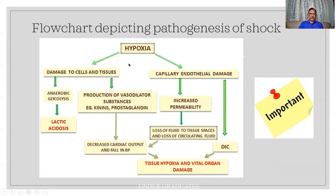At the cellular level, hypoxia causes damage to cells, leading to glycolysis and lactic acidosis — the culprit. There is also production of vasodilators, kinins, and prostaglandins, which can result in peripheral pooling, decreased cardiac return and output, and a fall in BP. There is also endothelial damage leading to increased permeability, which again leads to peripheral accumulation and decreased cardiac output. All of this ultimately leads to hypoxia and damage to vital organs such as the heart and brain, with no revival at this point.